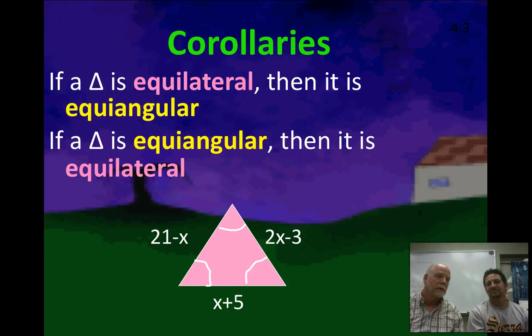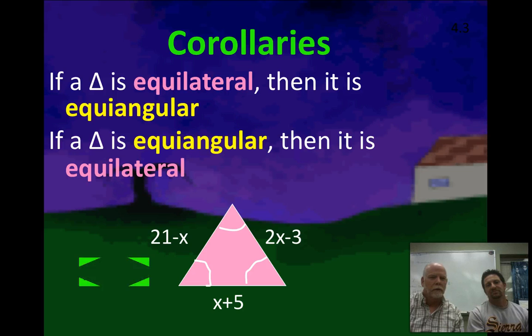They take these corollaries which floats from the fact that an equilateral triangle is also isosceles. If a triangle is equilateral then it's equiangular. If it's equiangular then it's equilateral. And so we know that all three of these, because we know that all three angles are congruent, we know all three sides are congruent. And so we could set any two of them to be equal to each other to set up an equation to find x. Maybe the 21 minus x equals x plus 5. Add x to both sides and we get 2x. Subtract 5 from both sides, we get 2x equals 16. Divide by 2 and that's where the 8 comes from.